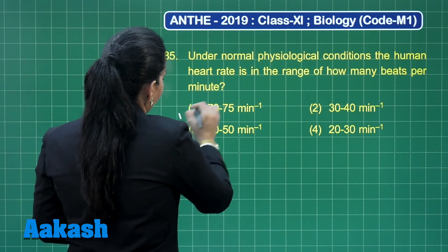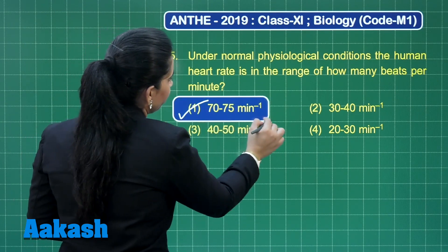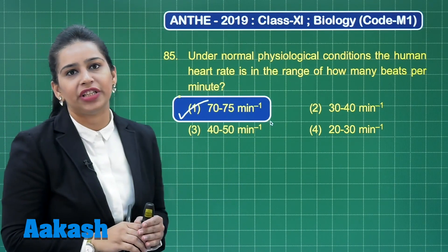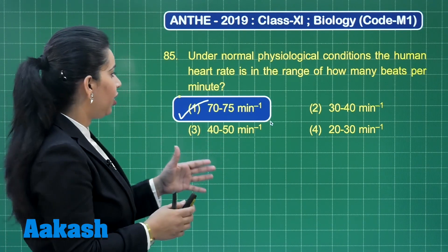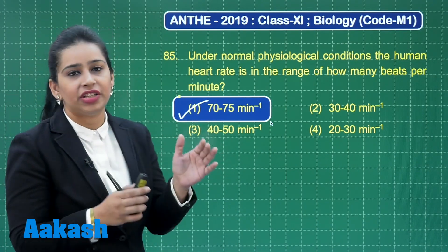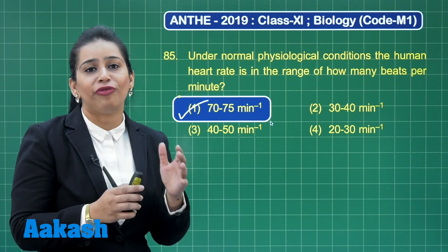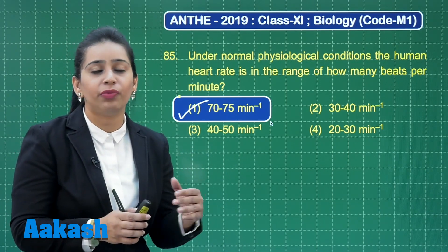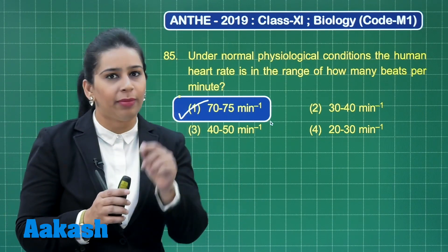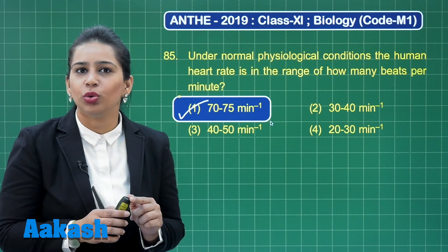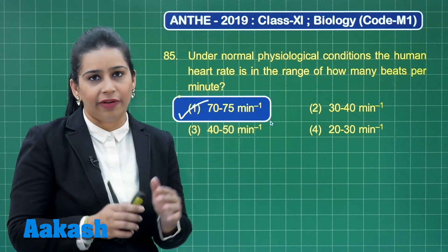The answer is option number 1, which is 70 to 75 per minute. The SA node generates 70 to 75 beats per minute under the control of the parasympathetic neural system, which uses the neurotransmitter acetylcholine. Remember, the parasympathetic neural system is an inhibitory control for our heart.